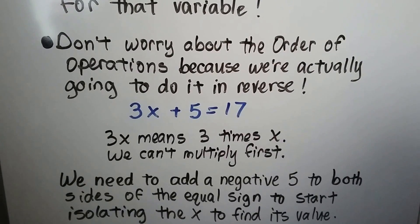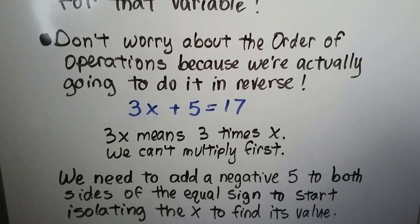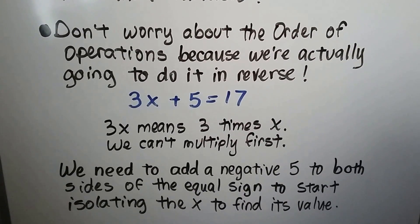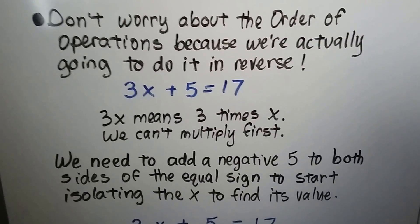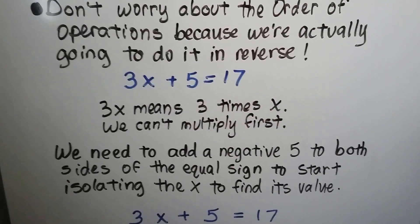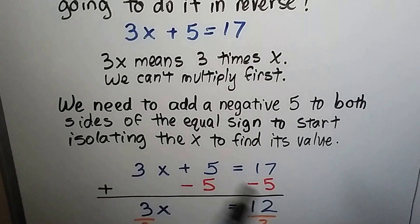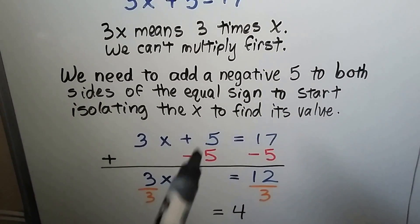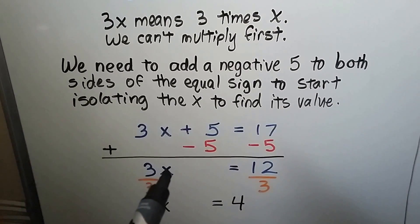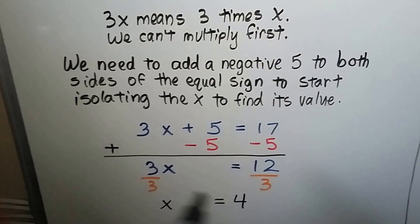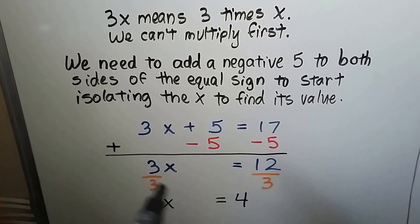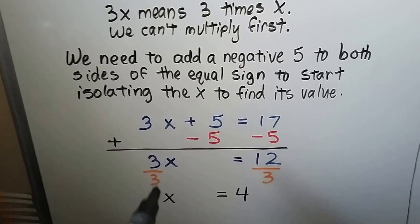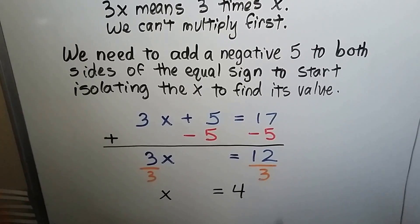3x plus 5 equals 17. 3x means 3 times x, but we can't multiply 3 times x because we don't know what x is. So we have to add a negative 5 to both sides of the equation to get rid of that 5. We end up with 3x equals 12. Then we can divide each side by the coefficient 3 to make it a 1. We get 1x equals 4.